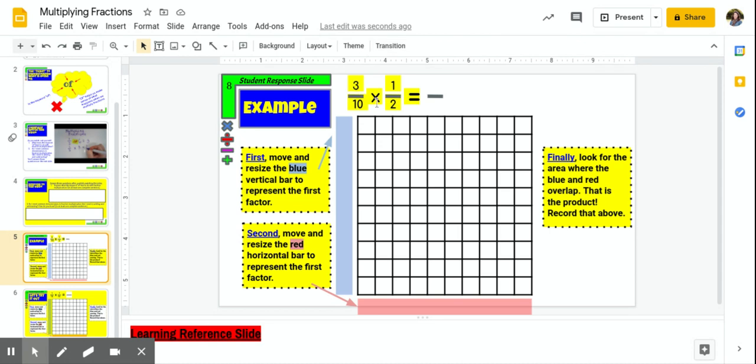We have 3 tenths of 1 half, and we are going to use this 10 by 10 array, this base 10 grid, in order to show what is happening when we take just 3 tenths of 1 half. So first of all, you can notice that my directions are written in these boxes.